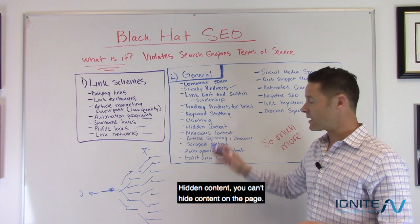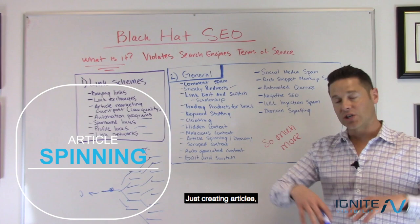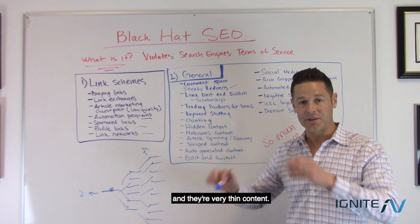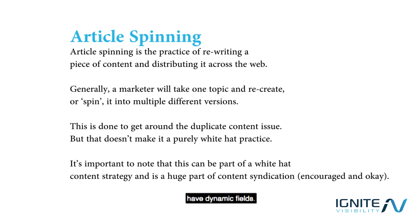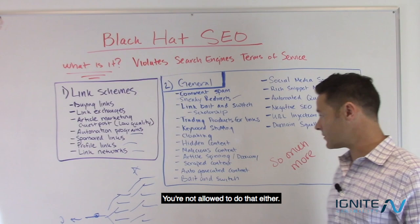Keyword stuffing — putting too many keywords on a page — is something you can't do. Cloaking means showing Google one page but serving another. Hidden content on a page is not allowed. Article spinning: just creating thin pages so they rank in Google. A lot of people do this through PHP scripts or a content matrix where you create multiple versions of a paragraph, spin it, and create doorway pages that rank in Google. You're not allowed to do that either.